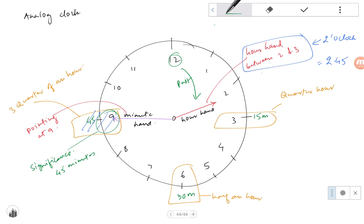In this case, as the minute hand is already past twelve, and it's three-quarter of an hour past two, we can also say the time now is three-quarter past two.